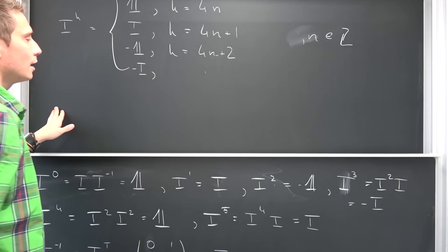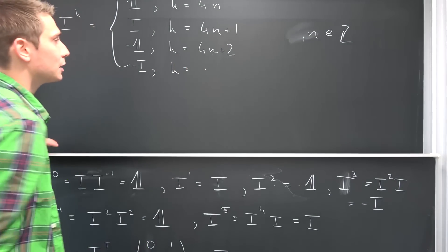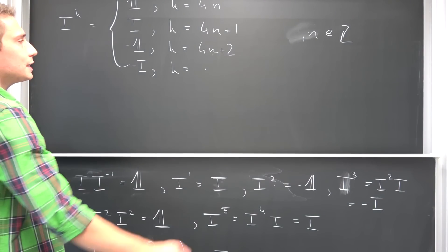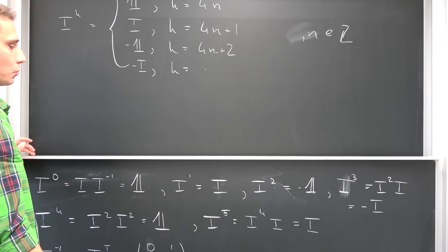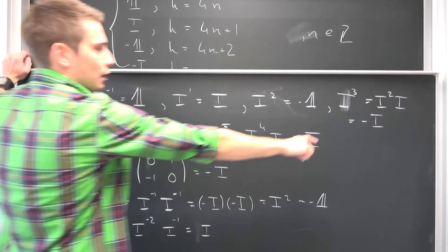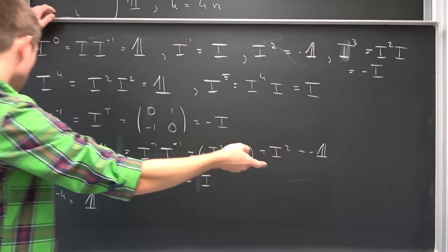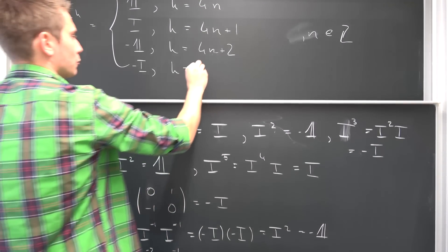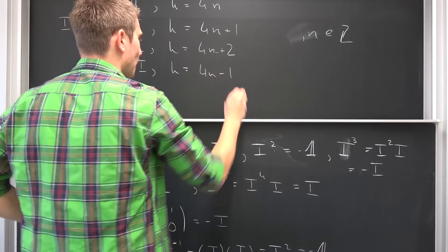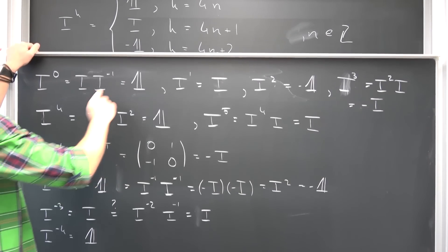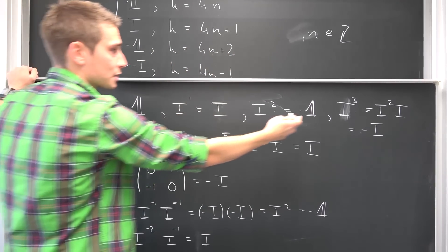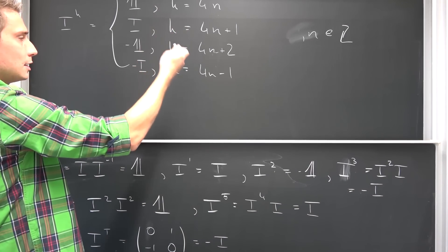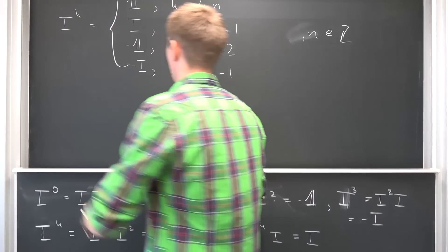Negative the imaginary unit — there's only one case left. This is 4n minus 1. We get there with 3, 7, or negative 1. If we plug 0 in, we get negative 1. If we plug 1 in, 4 minus 1 gives us 3. If we plug 2 in, 8 minus 1 gives us 7, and so on. And this is it.